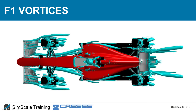The Y250 vortex in a real F1 car is very strong and travels more outboard than shown in this simplified model, pushing turbulent front-tire air away from the side pod and floor. Rear wing tip vortices are visible in the CFD animation. A vortex created by the fin between the side pod and rear tire is conducted between the rear tire and diffuser, sealing the diffuser from the turbulent rear tire wake.